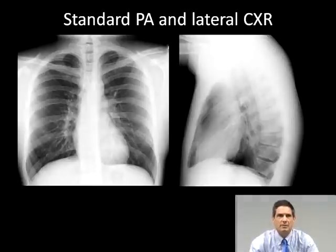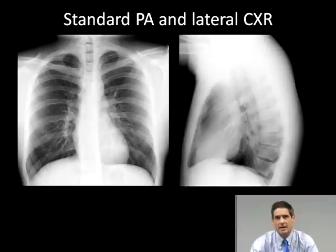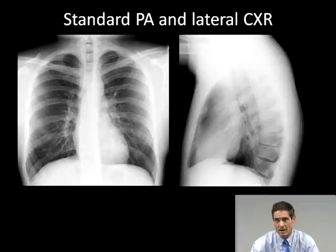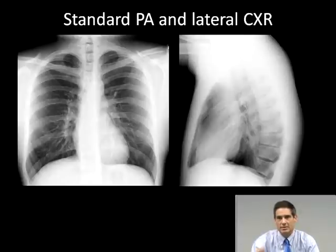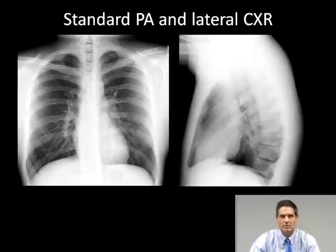Here's an example of a standard PA lateral chest x-ray of a nice young person. On the PA, the heart size is less than half the transverse diameter of the thorax. On the lateral, the vertebral bodies become less white — more gray or black — as you go from top to bottom. Both posterior costophrenic angles are seen nicely, though the photograph may have compressed the image slightly compared to the native chest x-ray.